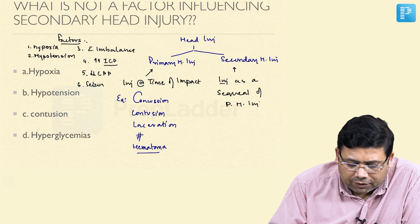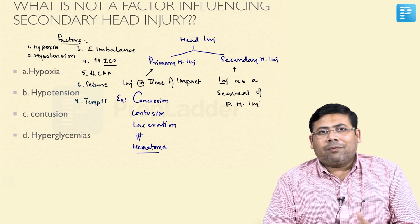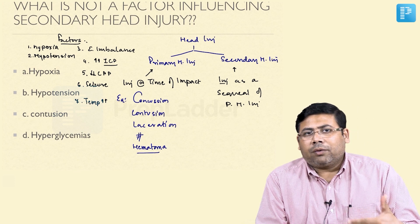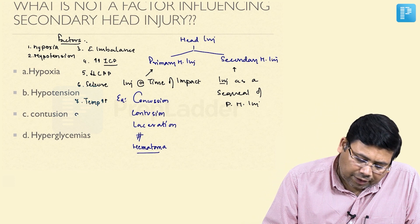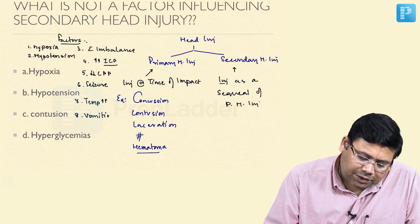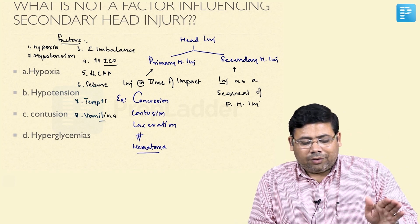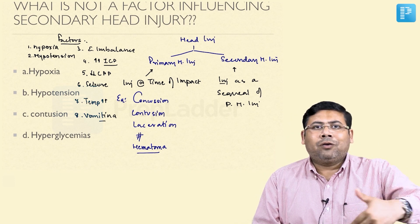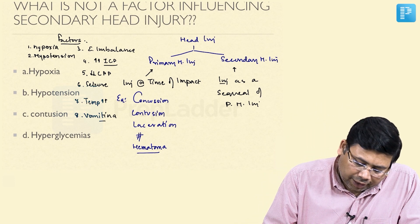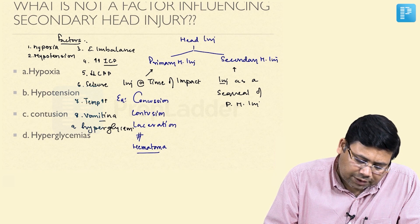Further factors include the presence of convulsions, and temperature — if there is fever, the metabolic rate will increase and more energy is expended. Then vomiting, which causes a sudden increase in pressure and sudden loss of electrolytes. And finally, hyperglycemia. These are the important factors controlling secondary head injury.